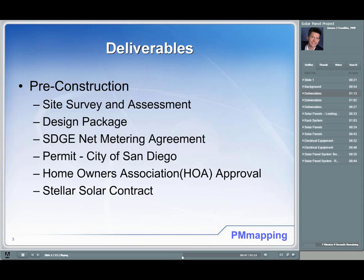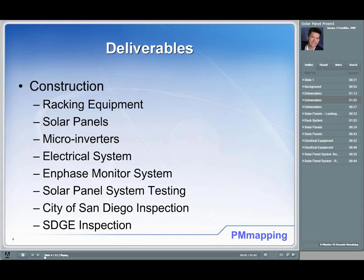We also had to prepare a permit application with the city of San Diego, which included an application form and the design package. I live in an area with an HOA, so we had to prepare a form, get four neighbors to review and approve it, and then get approval from the HOA. Finally, we had a contract with Stellar Solar — the company I went with to install the panels. Construction deliverables included the racking equipment, which is installed on the roof to mount the solar panels.